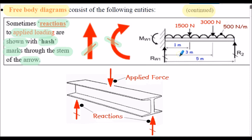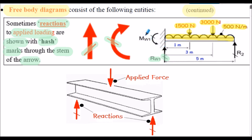This notation is sometimes found within beam analysis, such as this propped cantilever beam shown here on the right-hand side, where we have applied loading of 1,500 newtons, 3,000 newtons, and a UDL of 500 newtons per metre. The reactions are indicated with hash marks: the vertical reaction at the wall labelled Rw1, the reactive moment Mw1 in the wall, and the prop reaction R2 all have hash marks.